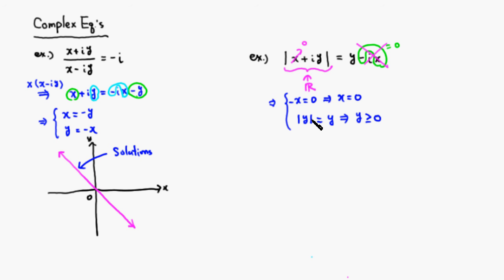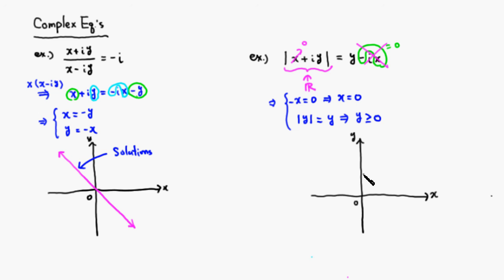So we know x must always be 0, and y just has to be non-negative. If you sketch the graph of the solution, x = 0 means it lies along the y-axis, and y ≥ 0 means we take the origin and everything above it. That is the graph of the solutions.